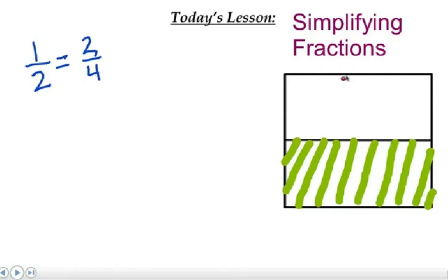Well, if I go ahead and split this into four parts now, now you can see that two of these parts are shaded out of the total of four. So two fourths is still the same green part, but it's the same as one half.